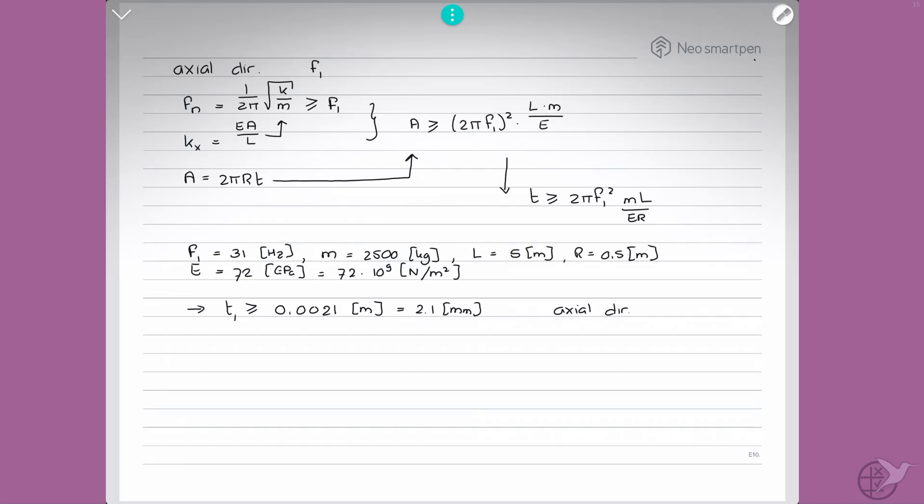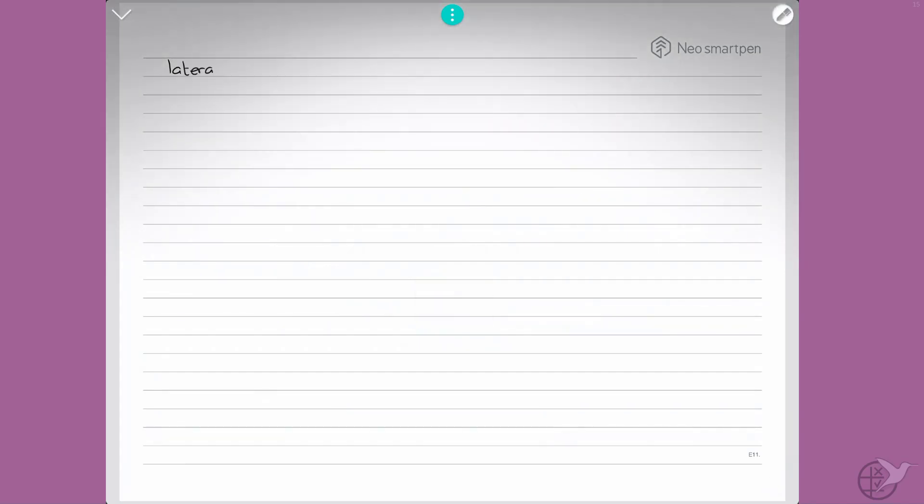Now, we'll look at lateral direction. We will call that minimum natural frequency F2. The natural frequency then has to be larger than this F2. And the stiffness in lateral direction, KY, is then equal to 3 times EI over L cubed. And if we substitute this in here, what we find for the area moment of inertia for bending is that I has to be larger or equal to 2π F2 squared times L cubed times M over 3 times the modulus of elasticity.